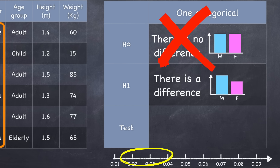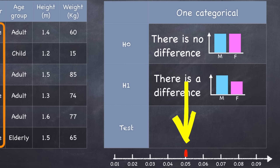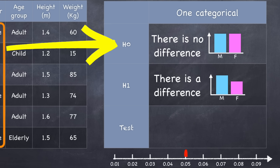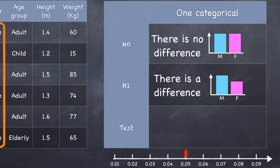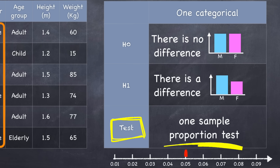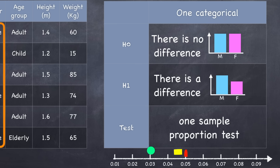Before we calculate this probability — which we call our p-value — we must decide how small is small enough. Below what value of p would we reject the null? We must decide on that cutoff before we calculate the p-value, and we call that cutoff the alpha value. For all examples in this video, we'll use an alpha value of 0.05, or 5%. So we have two scenarios: the null hypothesis (no difference) and the alternative hypothesis (there is a difference). We apply a one-sample proportion test, which generates a p-value. If p is less than alpha, we reject the null hypothesis and state that the observed difference is statistically significant.